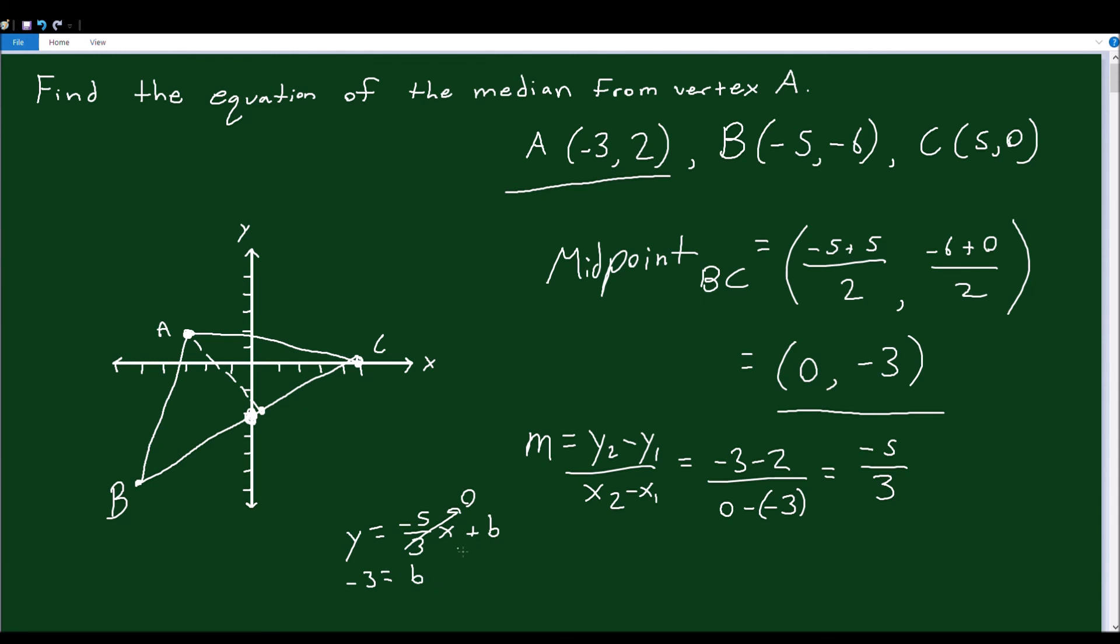Instead of going through this calculation, you also could have realized that B represents our Y-intercept. And this point is on the Y-axis. So our Y-intercept is negative 3. So we could have just seen that and realized that right away. But regardless, we can now write our equation. Y equals negative 5 over 3X minus 3. This is the equation of the median from vertex A to midpoint BC.